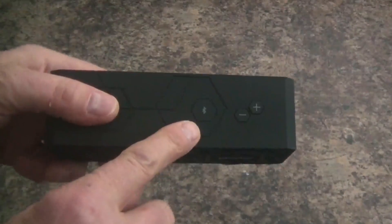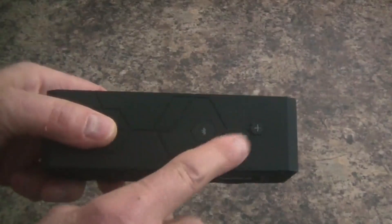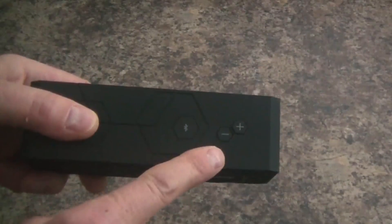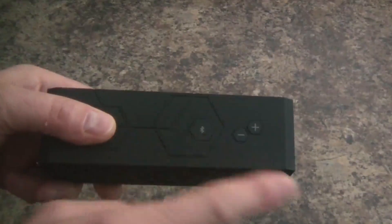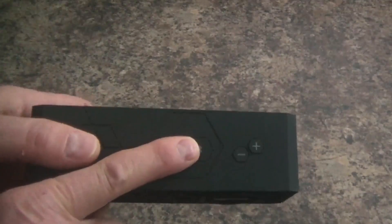On the top you have three buttons: the multi-function Bluetooth button and then the volume minus and plus. This is multi-function in that once the speaker's been turned on, you press and hold this button for a few seconds to get it into Bluetooth pairing mode.